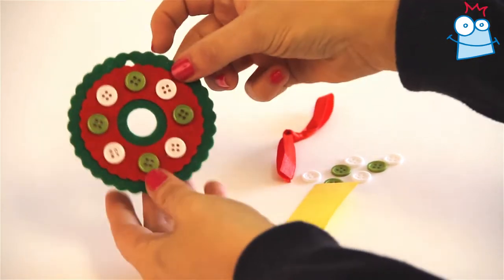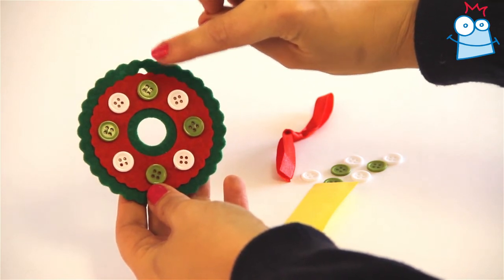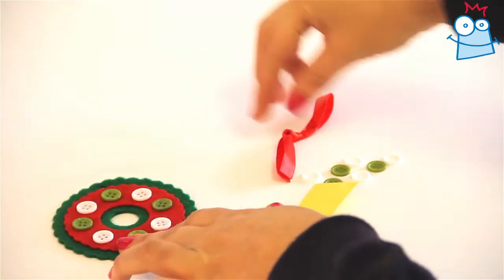Now we're going to add the finishing touch, the ribbon through the top of the wreath. So take the red ribbon from the kit and untie it.